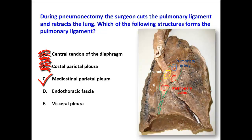So mediastinal parietal pleura is the correct answer. Endothoracic fascia is located outside the pleura, and the pulmonary ligament is a double fold of pleura, not of the endothoracic fascia. Visceral pleura is applied directly to the lung tissue and does not form the pulmonary ligament.